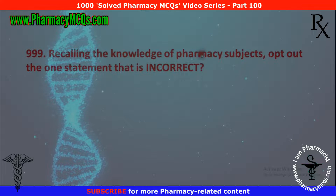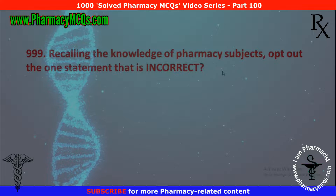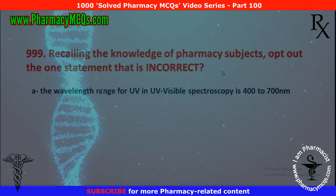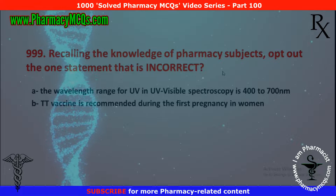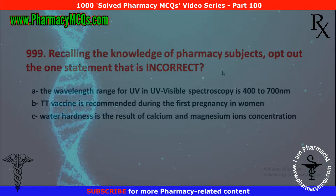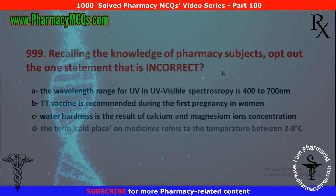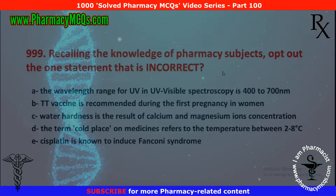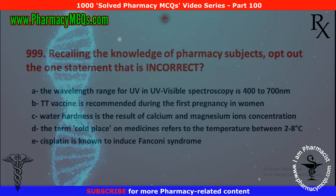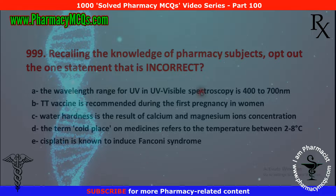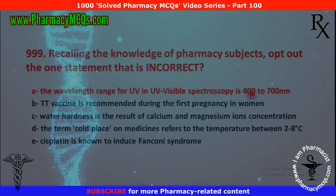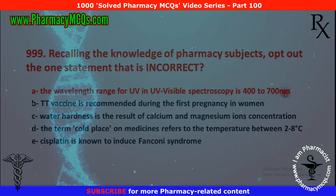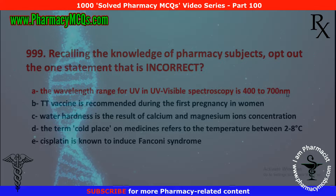Next MCQ: recalling the knowledge of pharmacy subjects, identify the one statement that is incorrect. Options: the wavelength range for UV-visible spectroscopy is 400 to 700 nanometers; TT vaccine is recommended during the first pregnancy in women; water hardness is the result of calcium and magnesium ion concentration; the term 'cold place' on medicines refers to temperature between 2–8 degrees Celsius; and cisplatin is known to induce Fanconi syndrome. The incorrect statement is the first — the UV range is actually 200 to 400 nm, while the visible range is 400 to 700 nm. So option A is incorrect.